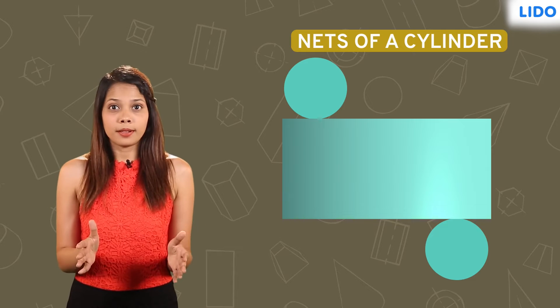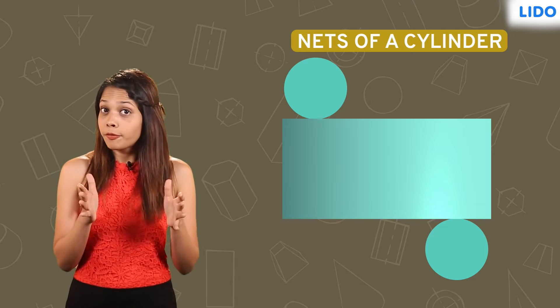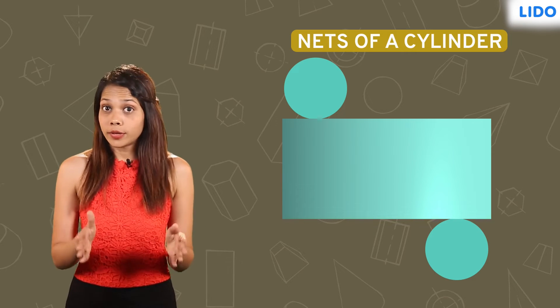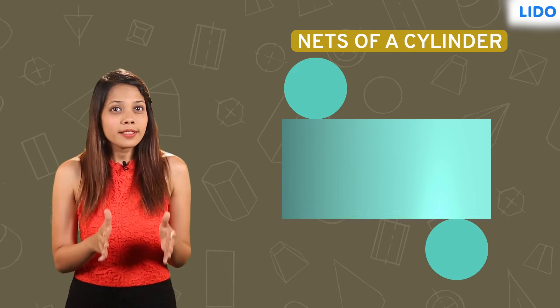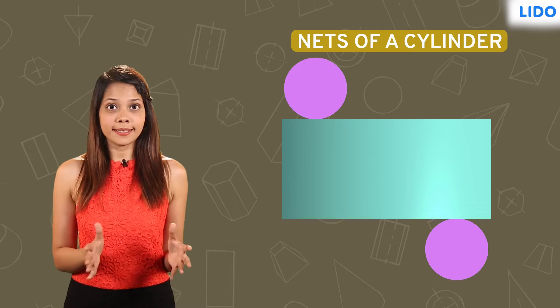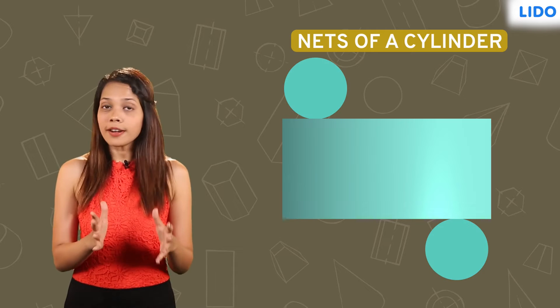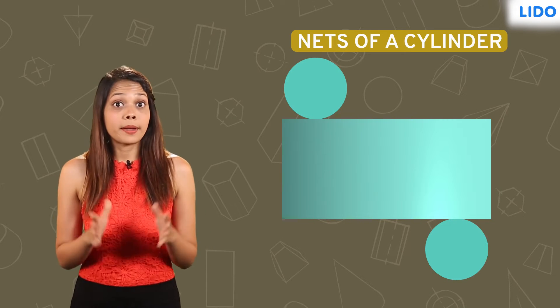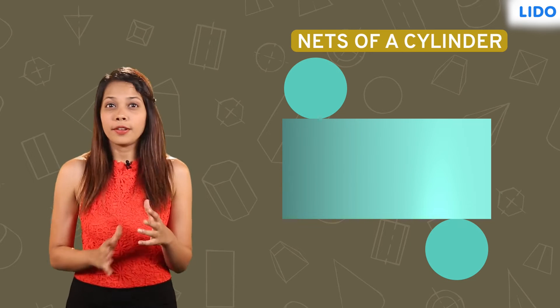The cylinder is now closed and complete. Here's another example of a net for a cylinder. Note that even this one has two circular faces and one rectangular face.